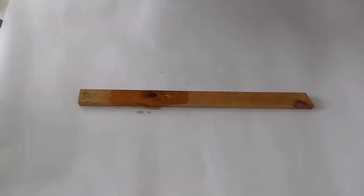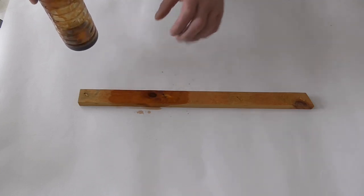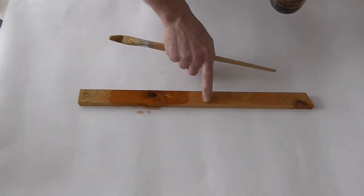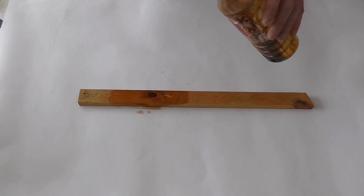That's dry now. Like I was saying before, you can't sand it. You can maybe give it a light key, but a very light key. You're usually better making sure your wood is nice and smooth before you put the knotting on.